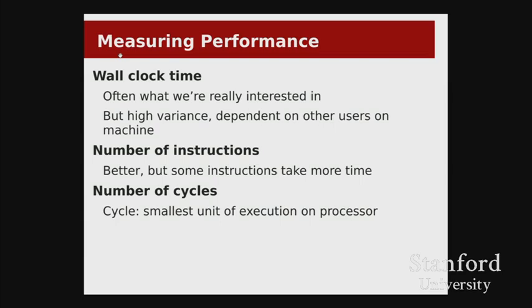The problem with just using a stopwatch is that clock time is going to be pretty high variance. It depends on things like whether other people are using the same machine. If 10 people are using one machine with only one core, everybody's program is going to get 10 times slower, but that shouldn't count against the program. So maybe we'd say we know about assembly and assembly instructions are what's actually executing on the machine. Let's consider just measuring the number of instructions that execute for our program — every line of assembly counts as one. Program A ran a million instructions, program B ran 100,000, so program B was 10 times faster.